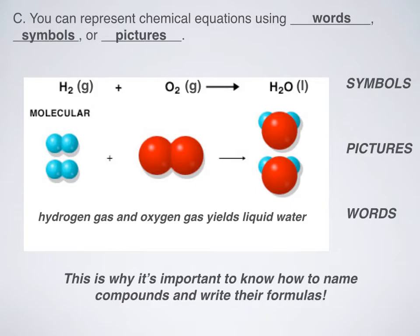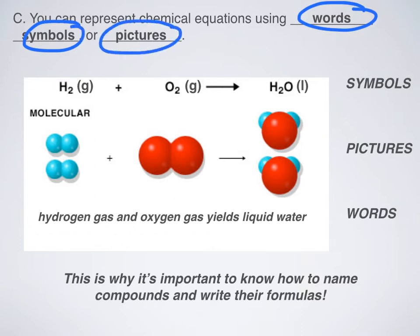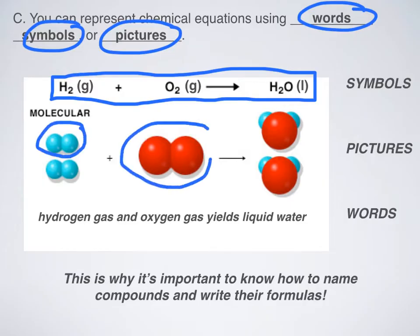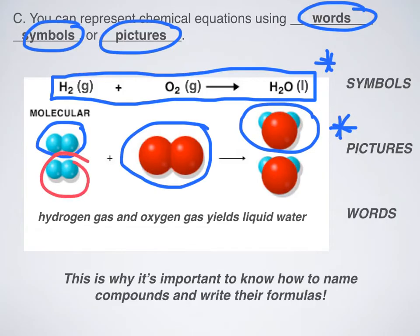We can represent chemical equations using words, symbols, and pictures, and we're going to use all three throughout the year. Symbolically, we have H2 + O2 yielding H2O. In picture form, you can see what H2 and O2 look like and what H2O looks like. If you're wondering why there are two hydrogens and two waters shown, it's because the picture is showing a balanced equation, which we won't cover until a couple of days from now.